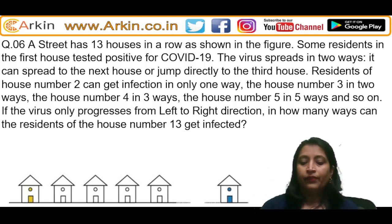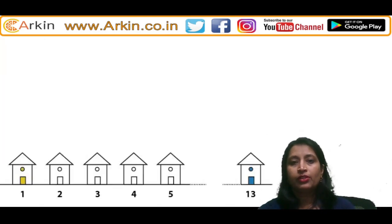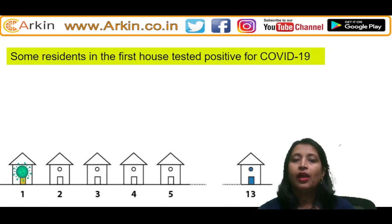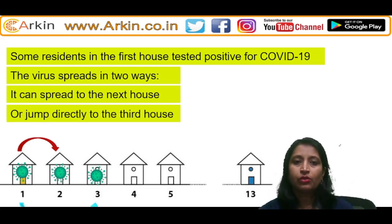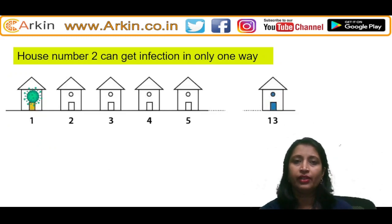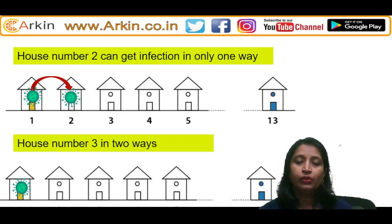Let's jot down all the information given here. There are certain number of houses and some residents are positive for COVID in the first house. The virus can spread in two ways: it can spread to the next house, or it can directly jump to the third house. So house number two can get infection in only one way, and house number three in two ways — from one to two to three, and directly from one to three.